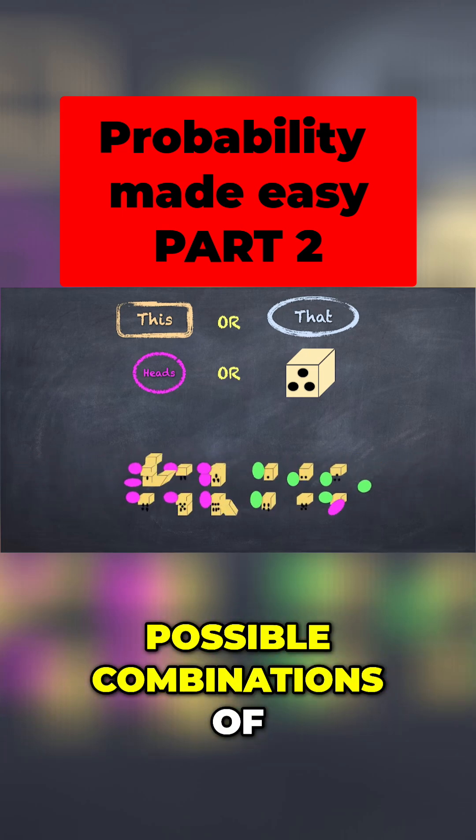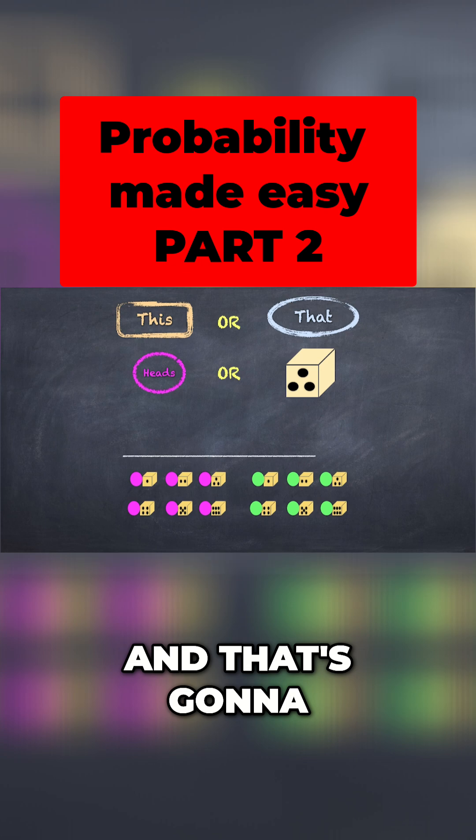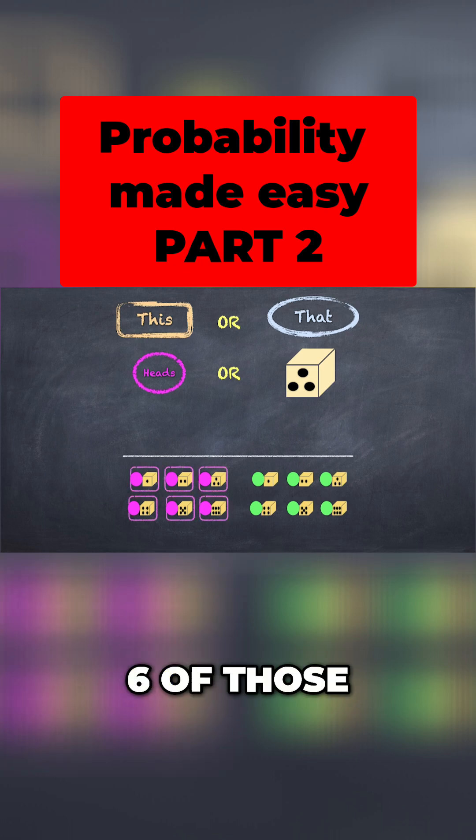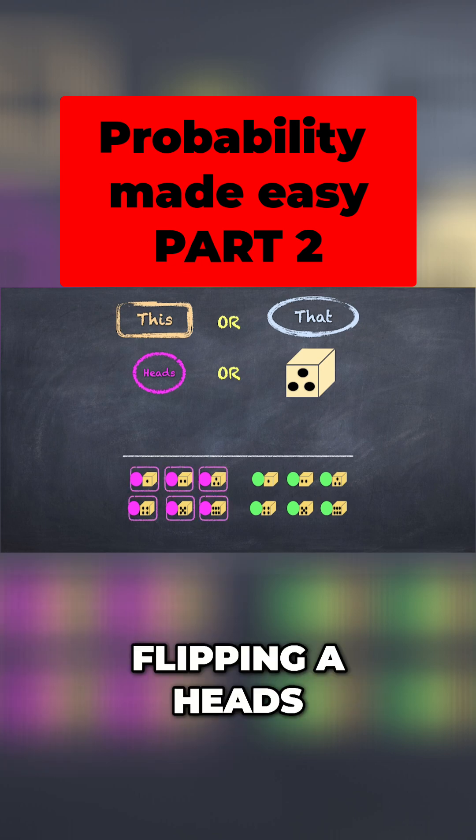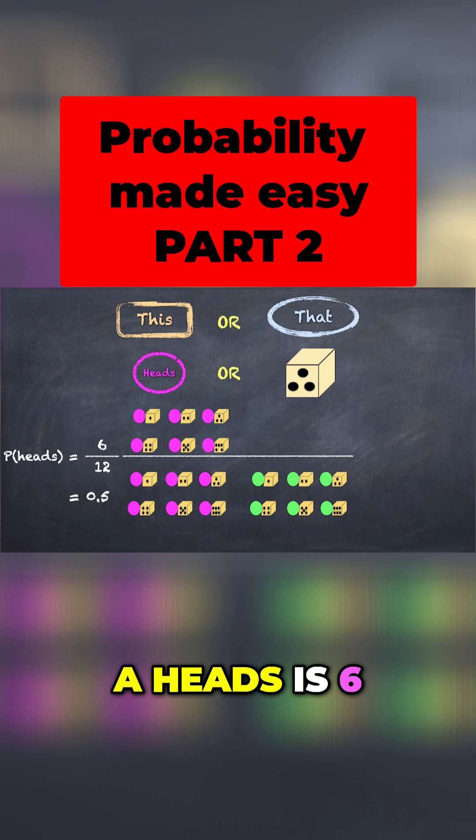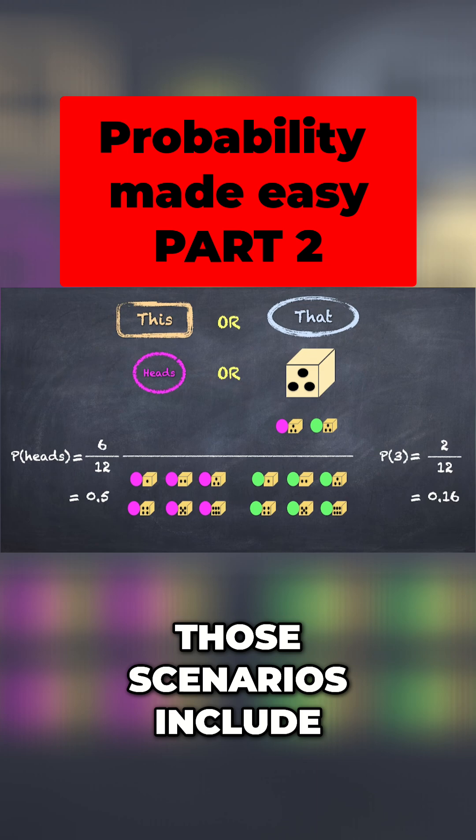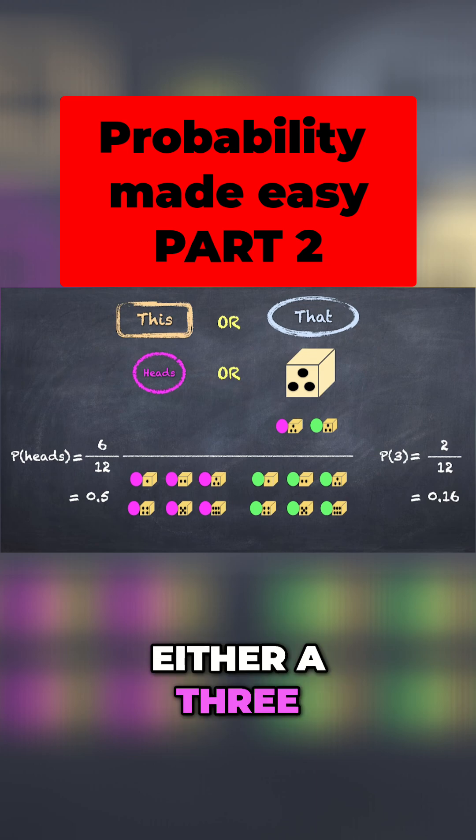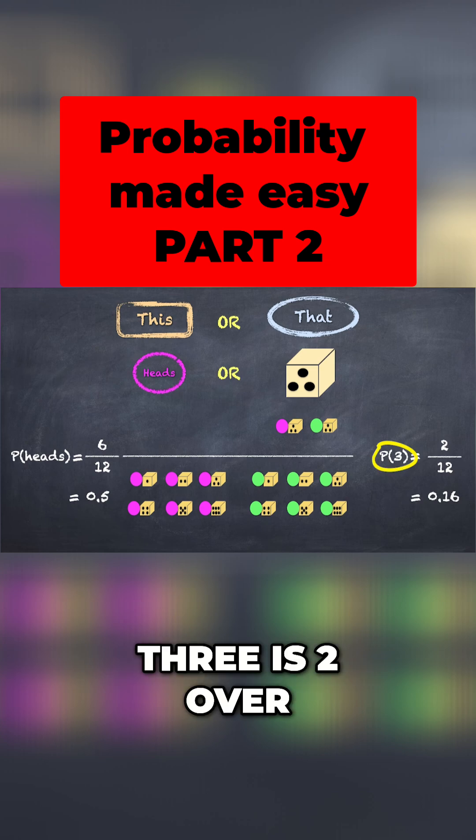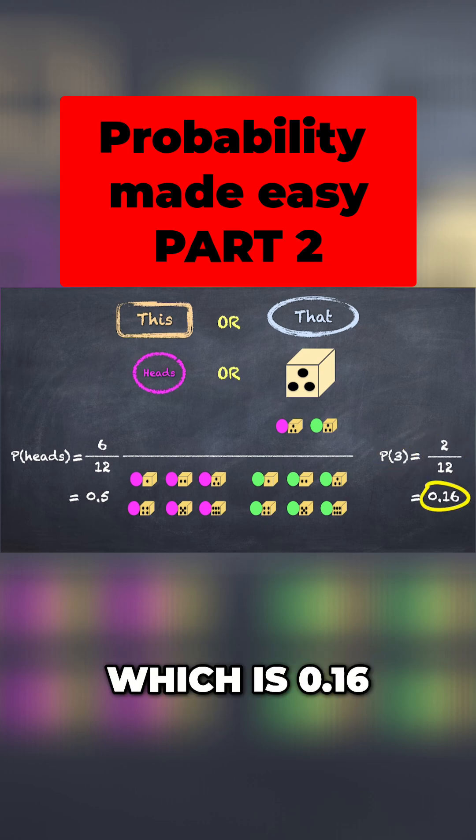Well, there are 12 possible combinations of coin flips and dice rolling, and that's going to be our denominator. Six of those 12 possibilities include flipping a heads, and so the chances of getting a heads is 6 over 12, or 0.5 or 50%. And two of those scenarios include getting a 3 on the dice, either a 3 with the heads or a 3 with the tails. So the probability of getting a 3 is 2 over 12, which is 0.16.